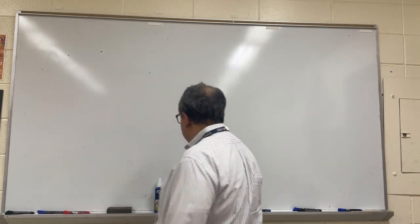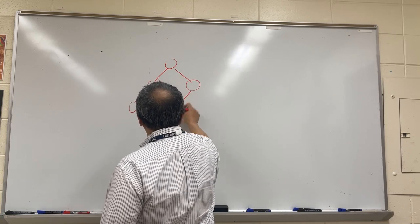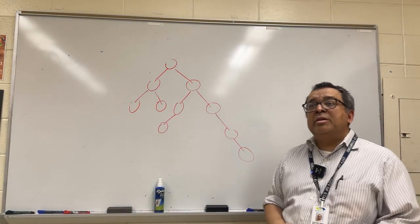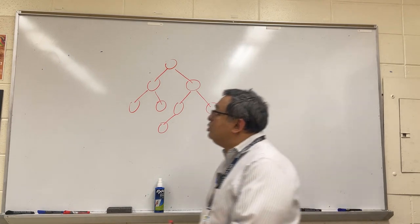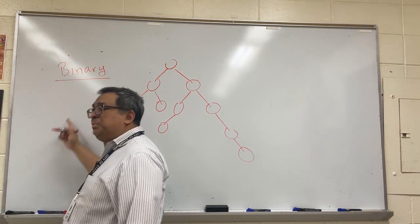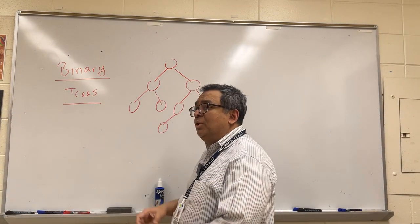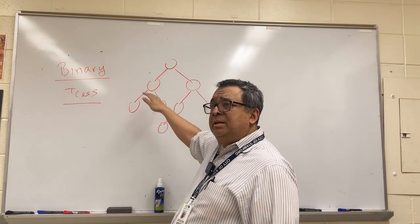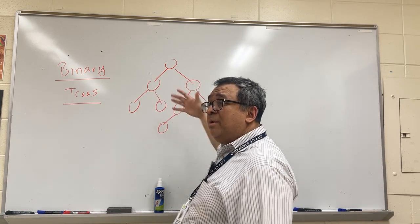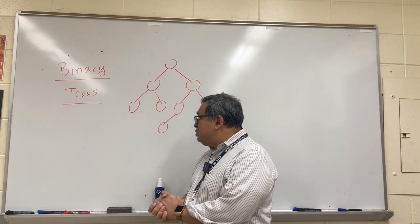Now we're going to talk about a particular type of tree. When we have a tree where each node has at most two children, that's a special kind of tree - we call it a binary tree. Our discussion of trees for this course will pretty much be limited to binary trees. A generic tree, like the hierarchy representing school administration with Mr. Rinaldi at the top and department heads underneath, is not binary - but here we have a binary tree.